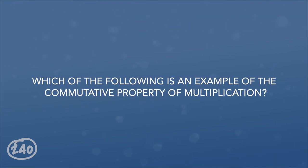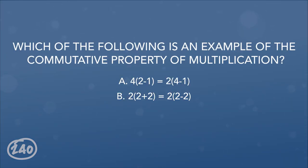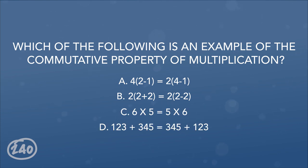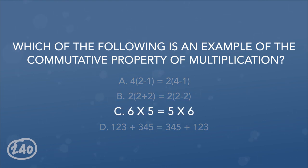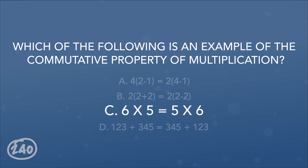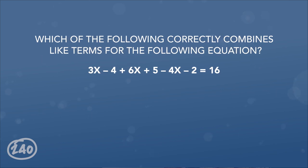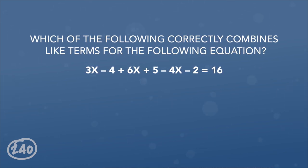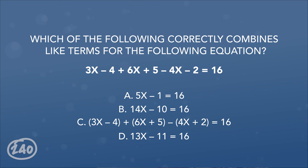Question 3: Which of the following is an example of the commutative property of multiplication? The answer choices are displayed on screen. The correct answer is C. The commutative property of multiplication states that the order of multiplication does not matter — the answer will be the same. This can be represented as A × B × C = C × B × A. Question 4: Which of the following correctly combines like terms for the given equation? The correct answer is A — it's the only option that combines the terms correctly.